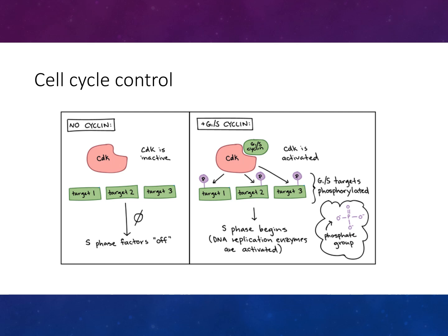Here's another example of what happens when there's no cyclin and when cyclin is present with S in G1. When there's no cyclin present, the factors are off. When it is present, the S phase begins and DNA replication enzymes are then activated. You can see what happens when the binding occurs and CDK is activated.